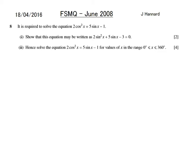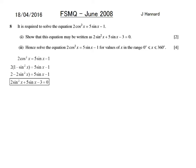Question 8: solve 2 cos squared x equals 5 sin x minus 1. Show this may be written as 2 sin squared x plus 5 sin x minus 3 equals 0. Replace cos squared x with 1 minus sin squared x — watch my trigonometric identities video if you don't know that. Substituting: 2(1 minus sin squared x) equals 5 sin x minus 1. Expanding and rearranging gives 2 sin squared x plus 5 sin x minus 3 equals 0. That's 2 marks.